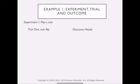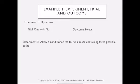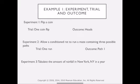So for example, I talked about flipping a coin. So my trial is getting one coin flip and my outcome was heads. Next, I'm going to allow a rat to run a maze containing three possible paths. So for trial, our trial is just going to be one run through and the outcome was path one. Next, one thing I could do is calculate the amount of rainfall in New York, New York each year. So my trial could be one year and the outcome for some year would be say 37.23 inches. So these are some different ways to tell the difference between an experiment, a trial, and an outcome.